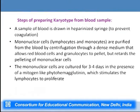For preparing a karyotype from a blood lymphocyte sample: first, a blood sample is drawn from the individual, heparinized to prevent coagulation. Mononuclear cells — lymphocytes and monocytes — are purified from total blood by centrifugation so that red blood cells and granulocytes pellet while mononuclear cells do not. The mononuclear cells are then cultured for three to four days in the presence of a mitogen like phytohaemagglutinin to stimulate lymphocyte proliferation.